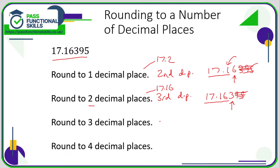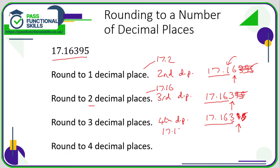To three decimal places, we're interested in the value of the fourth decimal place. We're interested in the digit here — we couldn't care less about the five, so let's forget about that. Because 9 is five or more — it's greater than five — the column to the left is going to move up one, so this rounds up to 17.164.